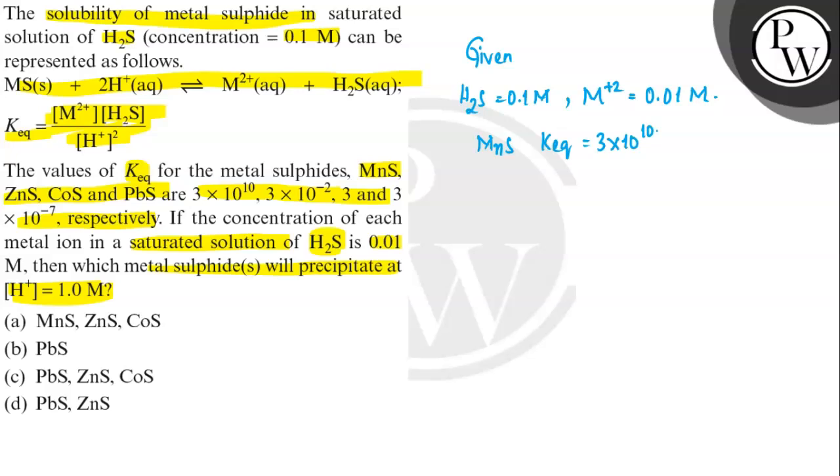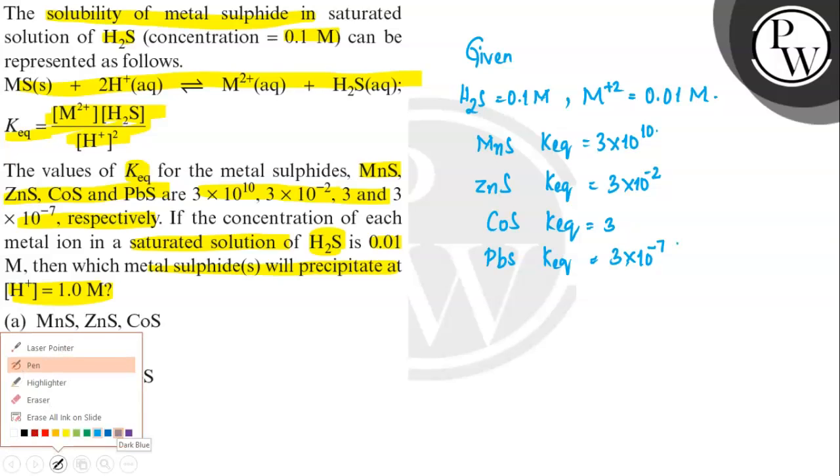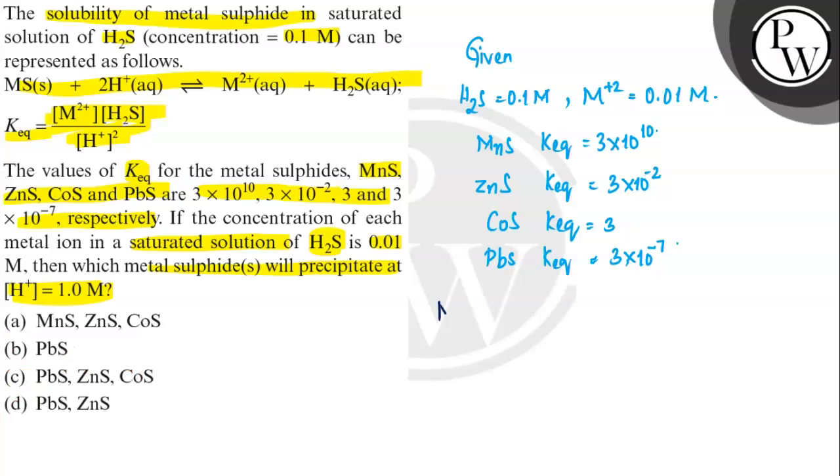Next is ZnS with K equilibrium value of 3 × 10^-2. Then CoS and PbS with K equilibrium values of 3 and 3 × 10^-7 respectively.